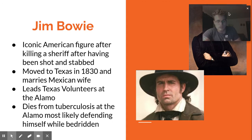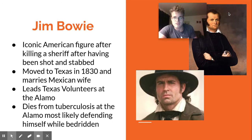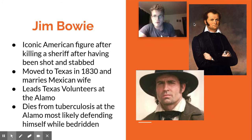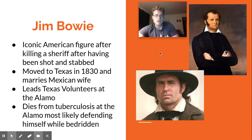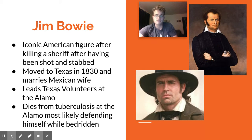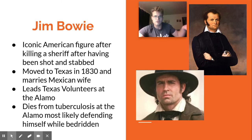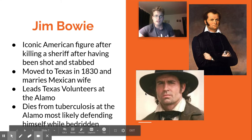Jim Bowie — you've heard of the Bowie knife, named after this individual. He was a slave trader, a politician, originally born in Kentucky. He's another iconic American figure who heads into the Alamo. He moves to Texas in 1830 and marries a Mexican wife. He leads the Texas volunteers and you're going to see him get into conflict with Colonel William Travis, who is the leader of the regulators — the official Texan army — while the volunteers are like militia, and they kind of butt heads.